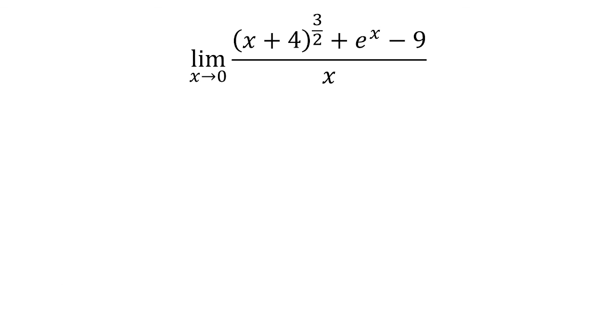Now we can do this a different way. We can recognize that this is the definition of derivative. So I'm going to define the function to be x plus 4 to the 3 halves plus e to the x. And note that f of 0 is equal to 9.